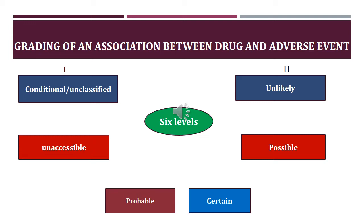The fourth type of association is called possible, which means that if there is data to show that an adverse event occurred after taking the drug, then it is termed as possible. That means whatever adverse event has occurred, it should be pharmacologically plausible.